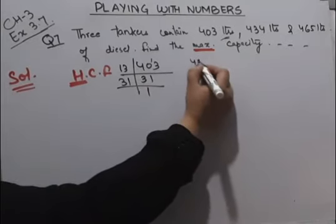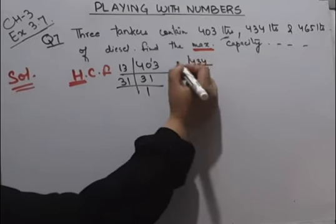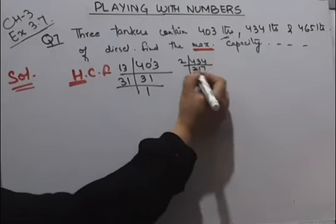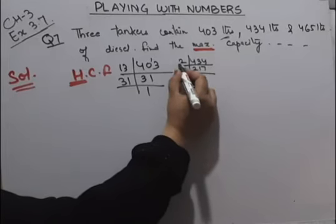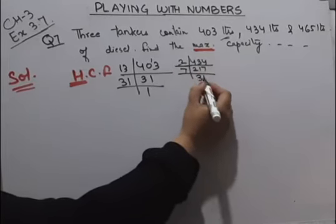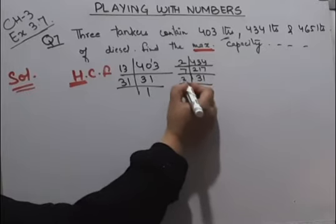Now 434. This is 2, 2 fours 8, 2 ones 2, 2 sevens 14. 7 threes 21, 1 here. 31 is a prime number.